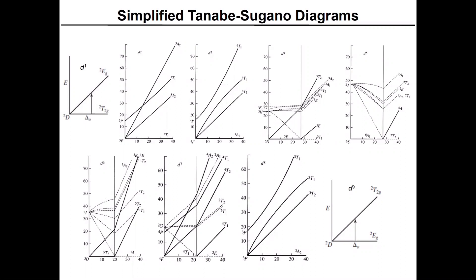What I want everybody to recognize is that looking at these from D1 all the way to D9, you can see that what is shown on these simplified diagrams is only the spin-allowed transitions that are possible. And that's on purpose because these diagrams get incredibly congested otherwise.